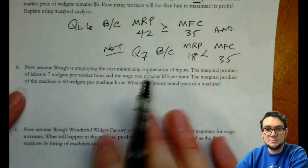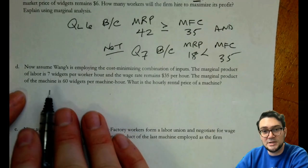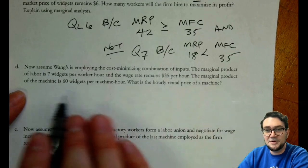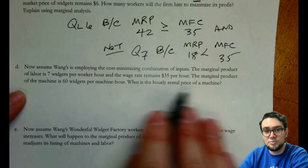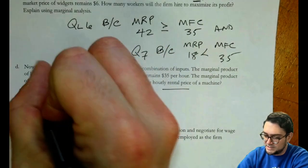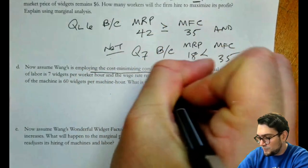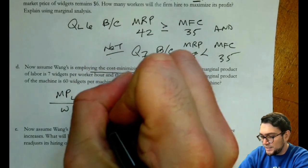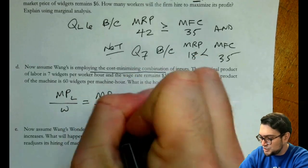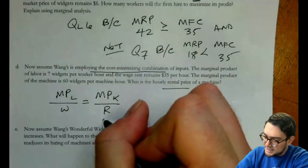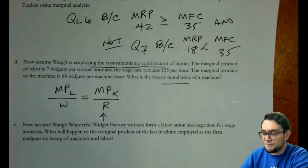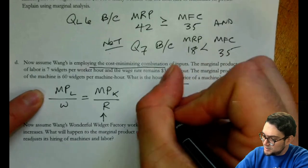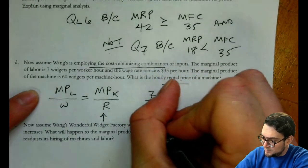Now assume that Wang's is employing the cost-minimizing combination of inputs. The marginal product of labor is seven. Wage rate remains 35. Marginal product 60. What's the hourly rental price? So this is telling us that they are doing cost minimizing. So the marginal product of labor divided by the wage is equal to the marginal product of the machines divided by the rent. And it's actually just asking us for what's that value for the rent.